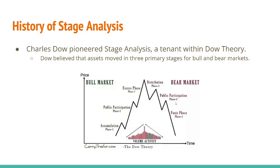Next we have the public participation phase, phase two of the bear market. This is when the asset has broken down and the first smart people to start shorting it come in. You'll get some initial pullbacks to maybe a previous support turned resistance, and then after you hit that previous support turned resistance, you get a huge down move — which is the panic phase, phase three of the bear market. That's where all of your dumb money that bought up here is just puking out.